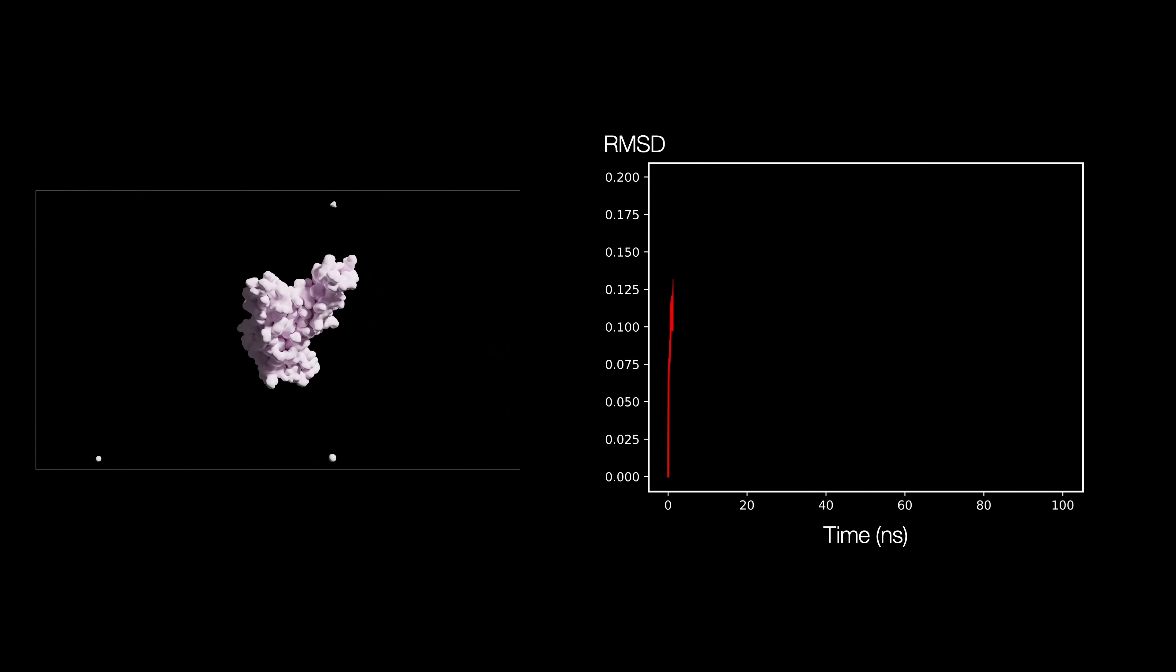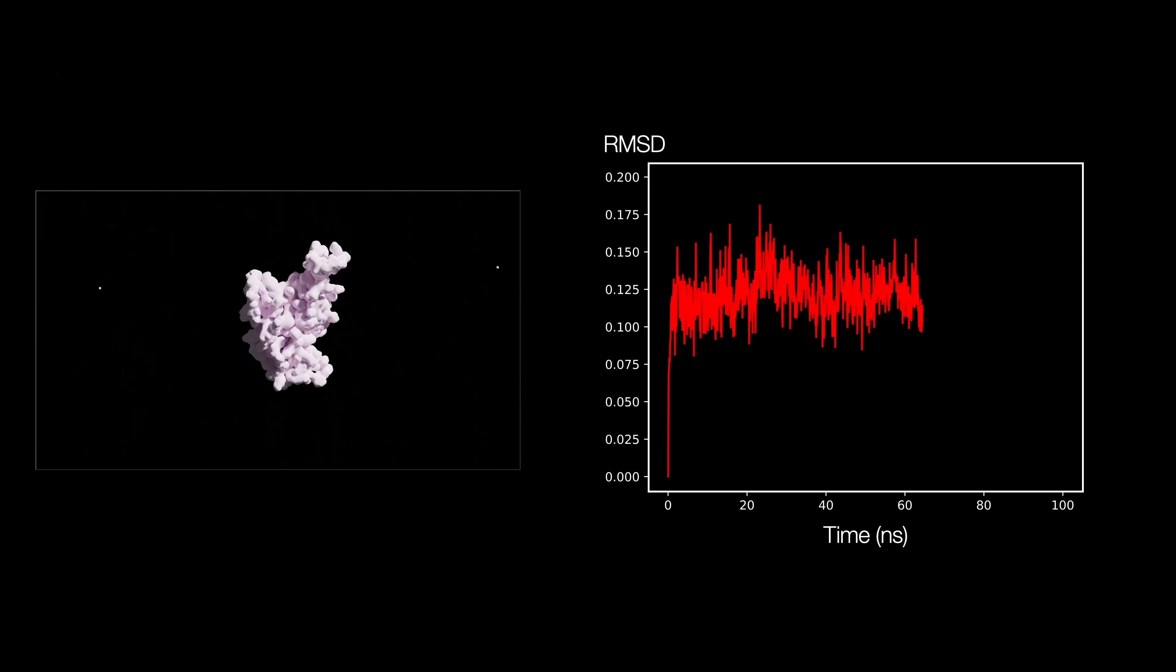The protein structure doesn't stabilize in the first few nanoseconds of the simulation. This can make the analysis faulty. A pretty good measure for this stability is the root mean squared distance. Looking at the RMSD graph, you can see that it stabilizes roughly in the last 30 nanoseconds of the simulation.